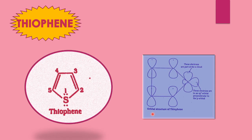This heterocyclic compound is thiophene. Thiophene is a five-membered heterocyclic ring system having sulfur as the heteroatom. In this structure, here is the five-membered cyclic compound and sulfur is the heteroatom. One of the carbon atoms is replaced by sulfur and this structure is thiophene.